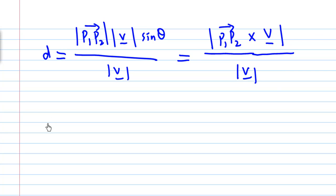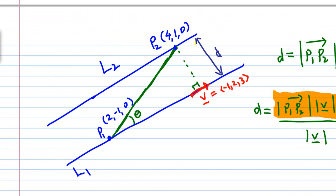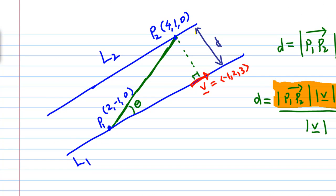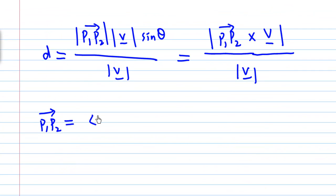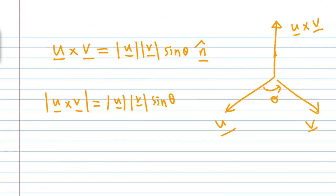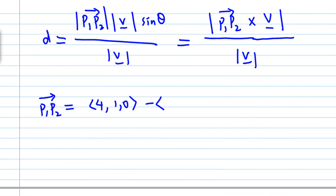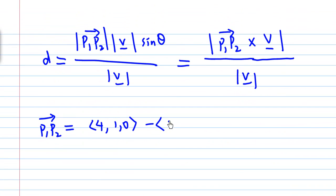Now, what is P1P2? P1P2 is the vector from P1 to P2. P1 is (2, -1, 0), P2 is (4, 1, 0). So this is (4, 1, 0) minus P1, which is (2, -1, 0), which equals (2, 2, 0).